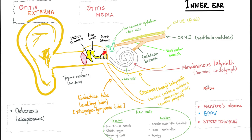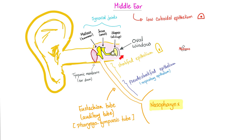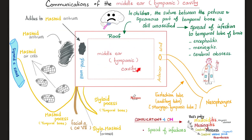Otosclerosis causes bone deposition at the rim of the oval window. Because the stapes is so rowdy, she decided to put her foot in the window — the oval window, not the round window. Here is the stapes; here is the oval window. And just like otitis media can cause conductive hearing loss, otosclerosis can also lead to the same problem: conductive hearing loss.